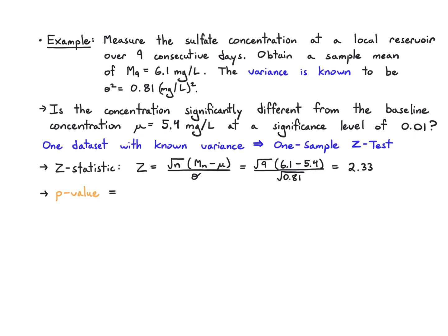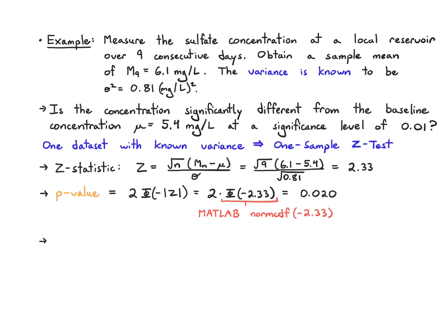From there we calculate the p-value — that's the probability that, under the null (which we take to be Gaussian with mean mu and variance 0.81), we saw a z-statistic this extreme or more. That's going to be twice the phi function evaluated at minus the absolute value of z, so 2 times phi of minus 2.33. In MATLAB we evaluate that by calling normcdf(−2.33), and we get 0.02.